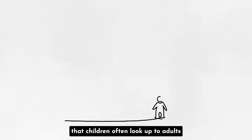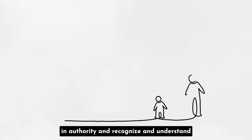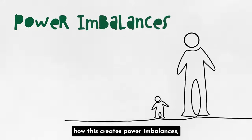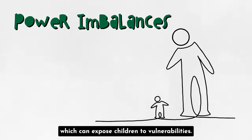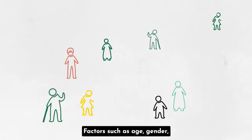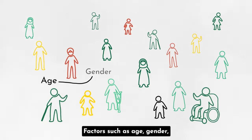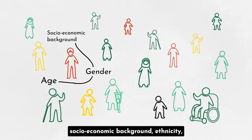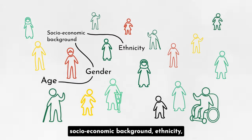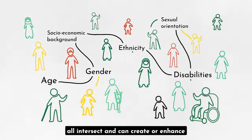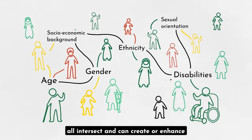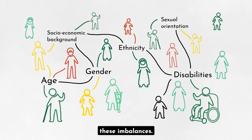We also need to remember that children often look up to adults in authority, and recognize and understand how this creates power imbalances which can expose children to vulnerabilities. Factors such as age, gender, socioeconomic background, ethnicity, disabilities and sexual orientation all intersect and can create or enhance these imbalances.